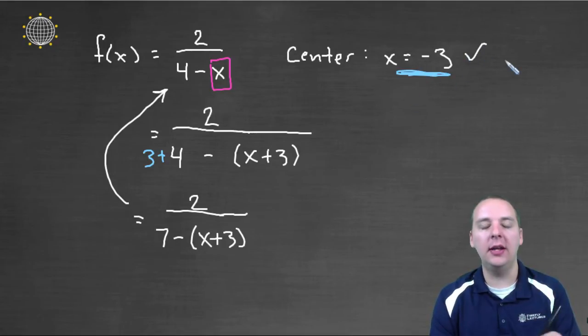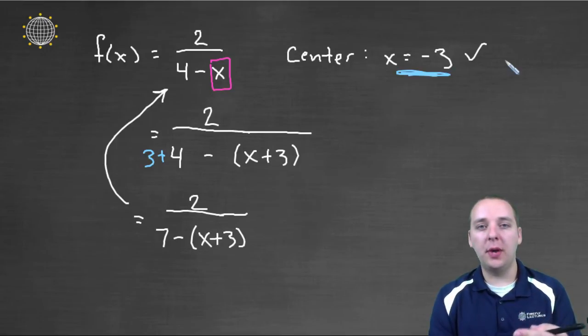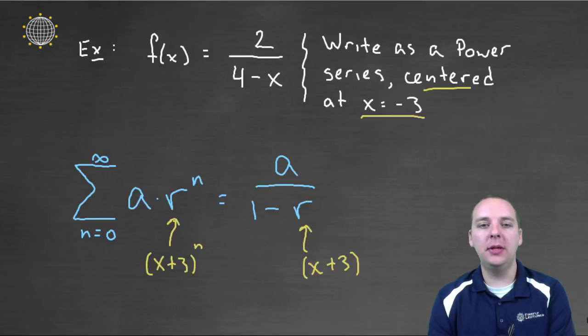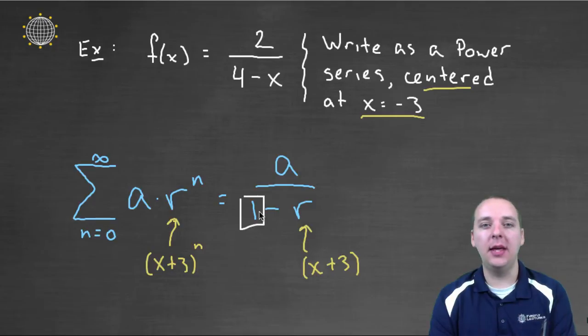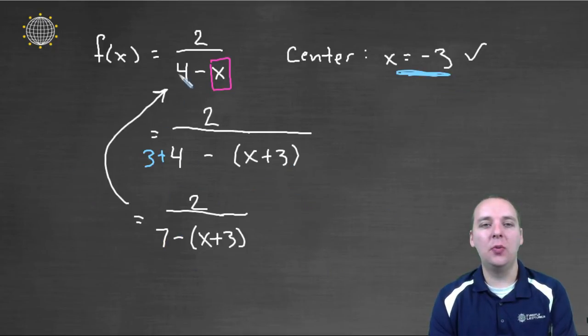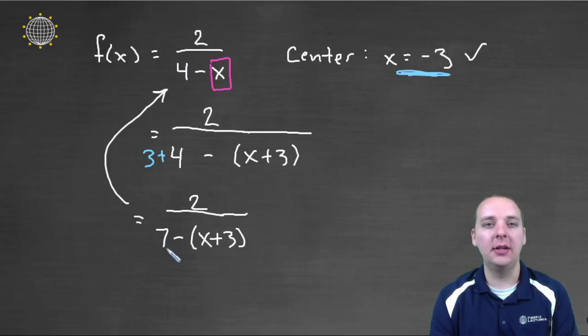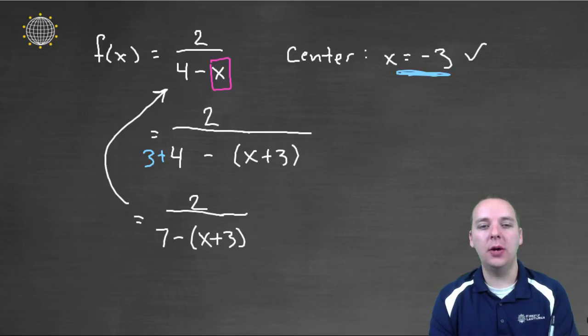Alright, good for us, that's great. But now unfortunately we just created a new problem or at least didn't fix another problem. This is supposed to be a over 1 minus r, it has to be a over 1 minus r. So, what I notice is this isn't a 1. It didn't start as a 1 and I just made it worse, now it's a 7. There's a common way to fix this as well.